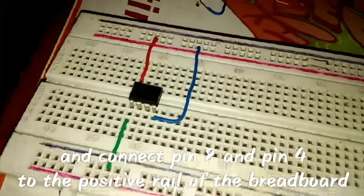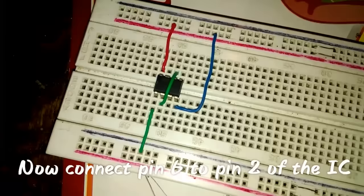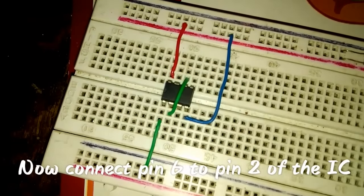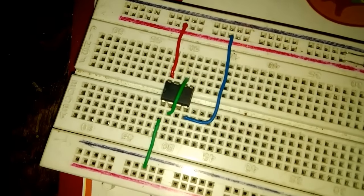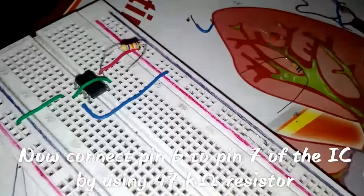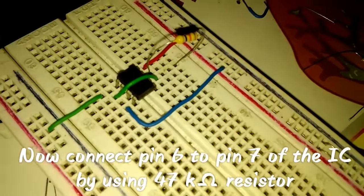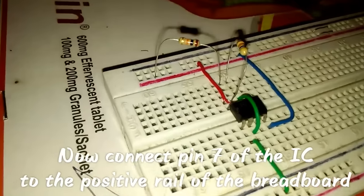Now connect pin 6 to pin 2 of the IC. Now connect pin 6 to pin 7 of the IC by using the 47K resistor. Now connect pin 7 of the IC to the positive rail of the breadboard by using the 10K resistor.